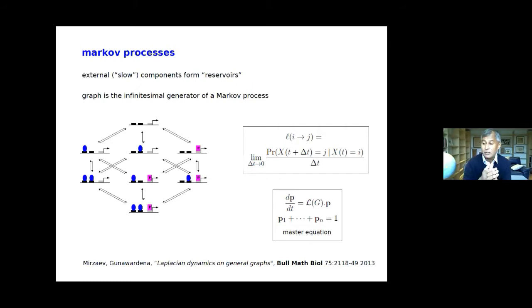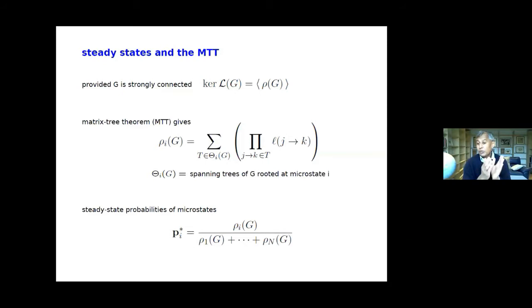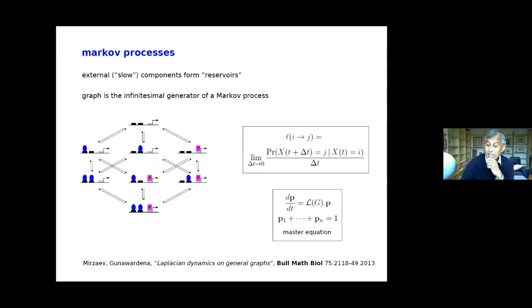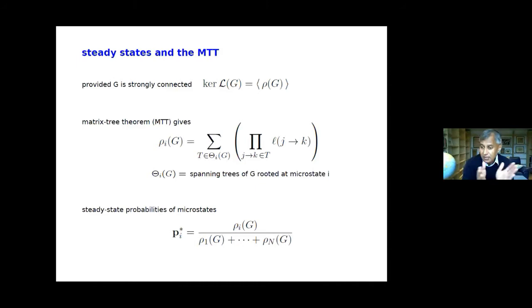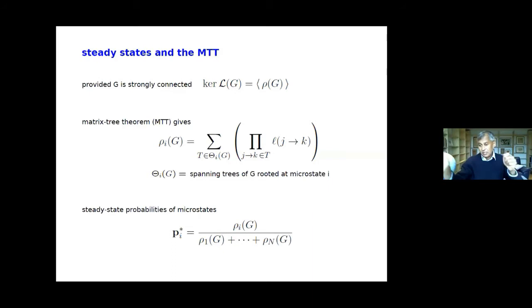This relationship between Markov processes with infinitesimal rates and graphs is one-to-one, so we're doing Markov process theory from a graph-theoretic standpoint. For time-scale separation we want the steady state, meaning we look for a vector in the kernel of the Laplacian matrix. If the graph is strongly connected — meaning I can get from any vertex to any other by a directed path — the kernel is one-dimensional, and we can write down a distinguished basis element using a classic result in graph theory: the matrix tree theorem.